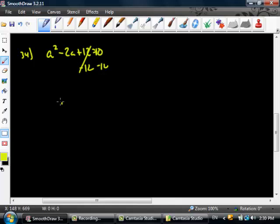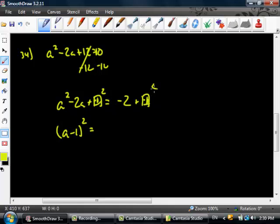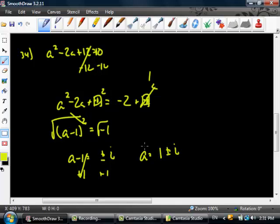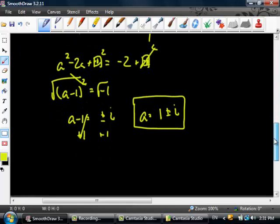So what I get is a squared minus 2a, leave yourself some space, equals negative 2 now. So now I'm going to add the box. Inside the box goes negative 1 and negative 1. The reason why I added the box twice instead of subtracting the box is because I'm working on two sides of the equal sign. This is a minus 1 squared equals, well negative 1 squared is 1, negative 2 plus 1 is negative 1. Take the square root of both sides. a minus 1 equals plus or minus the square root of negative 1 is i. I add 1 to both sides. I get a equals 1 plus or minus i.